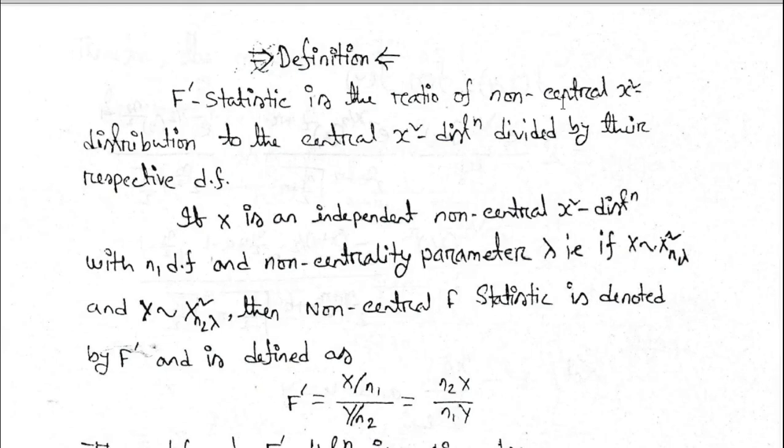Definition: F prime statistic is the ratio of non-central chi-square distribution to the central chi-square distribution divided by their respective density functions. If X is an independent non-central chi-square distribution with n1 degrees of freedom and non-centrality parameter lambda, where X tends to chi-square n1 lambda square, and Y tends to chi-square n2, then non-central F statistic